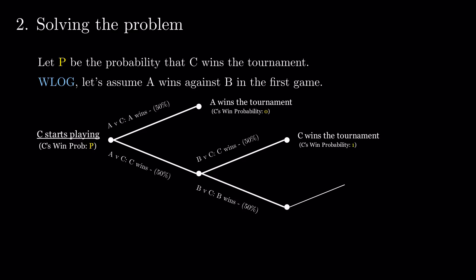Then, either B wins the next game and the tournament, or loses to A. And the tournament returns to the state it was in when C started playing. So, from this point on, C's win probability is again P.